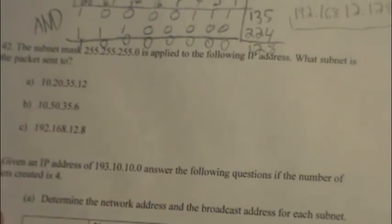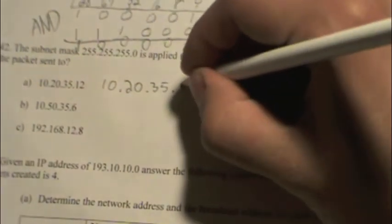So the answer is going to be the zero subnet of all of these IP address representations. So 10.20.35.0 is the subnet that 12 belongs to.